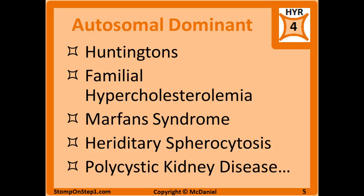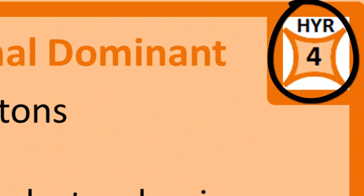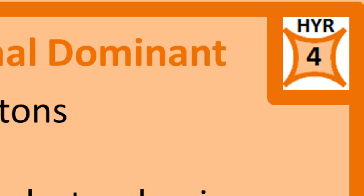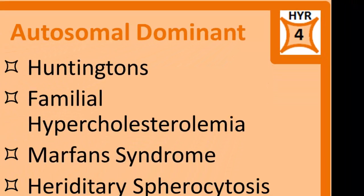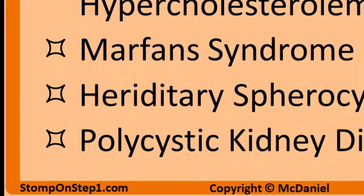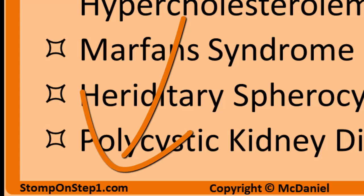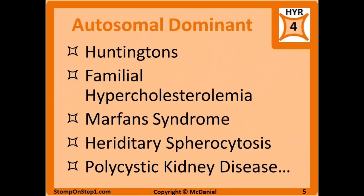I give the autosomal dominant type of inheritance a high yield rating of 4 — that's a rating scale from 0 to 10 giving a rough estimate of how important each topic is for Step 1. Now that we've reviewed recessive and dominant, we can talk about autosomal dominant diseases. These are diseases inherited in a dominant fashion where the gene that causes the disease is on one of the chromosomes other than X and Y — the autosomes, which are all 44 other chromosomes.